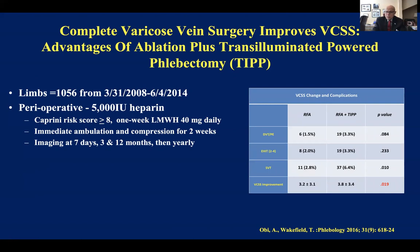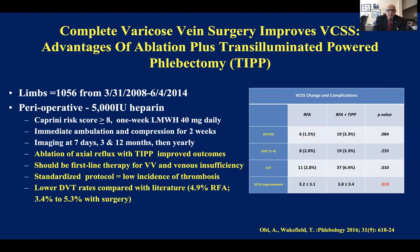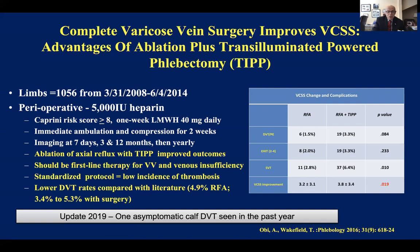There was an improvement in the VCSS score, and the authors felt that ablation of axial reflux with TIPS improved outcomes and should be the first-line therapy for varicose veins and venous insufficiency. They used a standardized protocol with a low incidence of thrombosis and DVT rates lower than those seen in the literature at that time. Throughout all of 2019 there was only one asymptomatic calf vein DVT seen, suggesting that as everything became more refined, outcomes continued to improve.